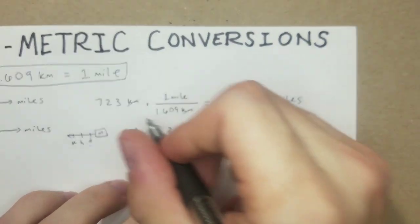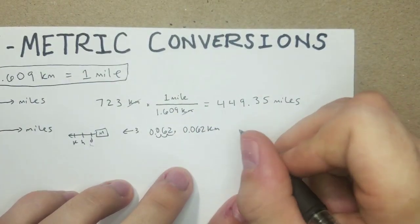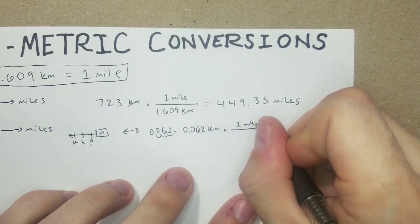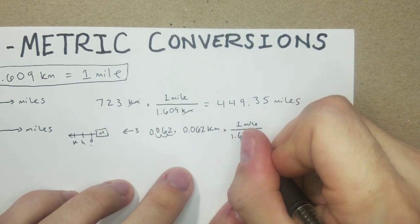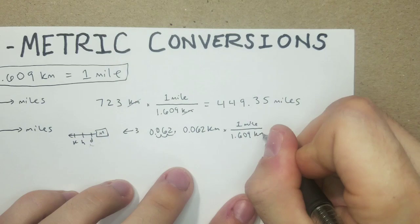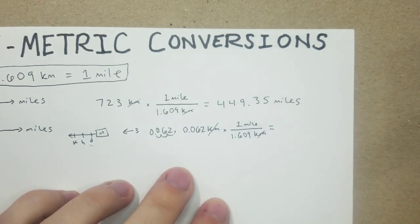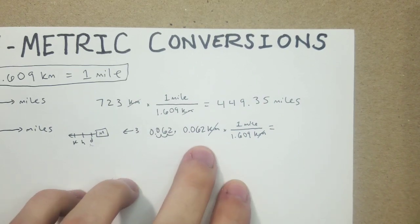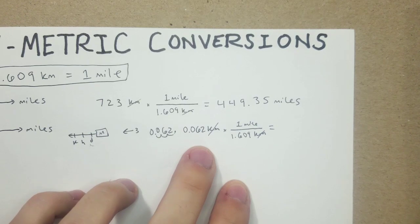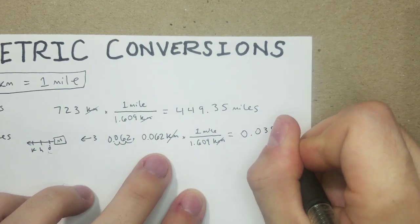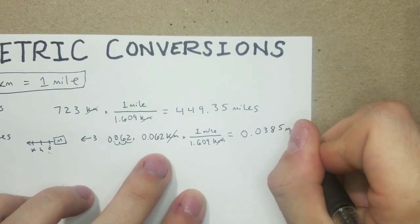And now we can just throw that right into the same equation we used before. Times 1 mile, which has 1.609 kilometers. Kilometers cancel. And now we're just left to do that division: 0.062 divided by 1.609 equals 0.0385 miles.